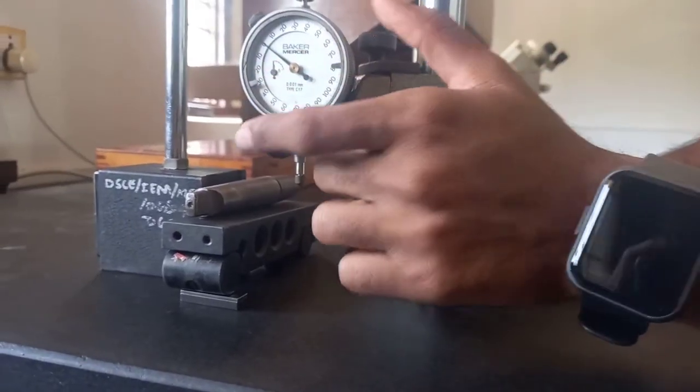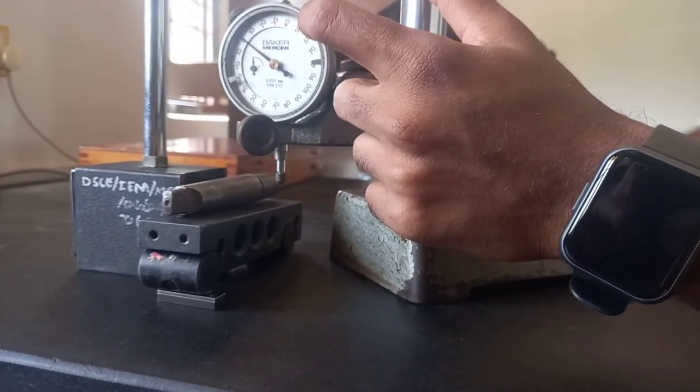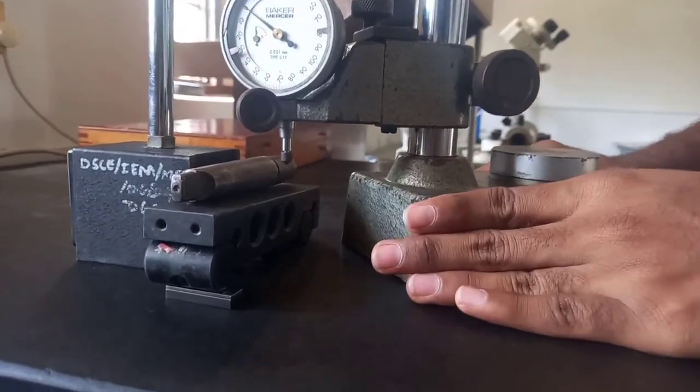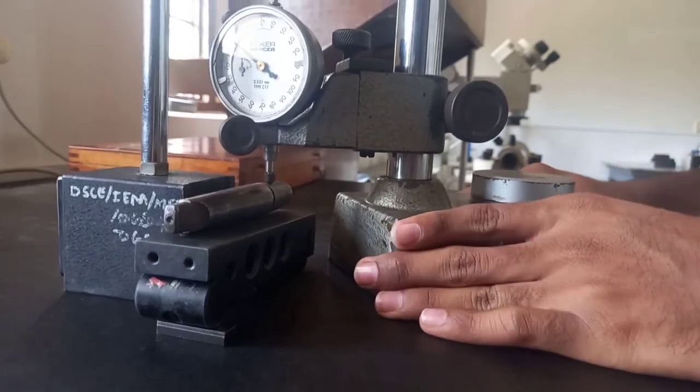So we got the minor diameter side deflection was around 50, and so now we are checking on the major diameter side.